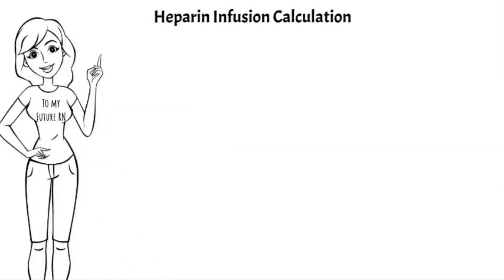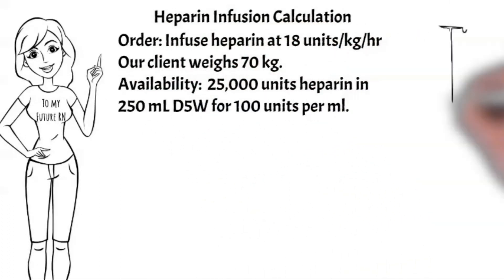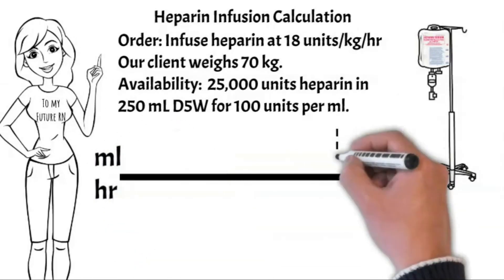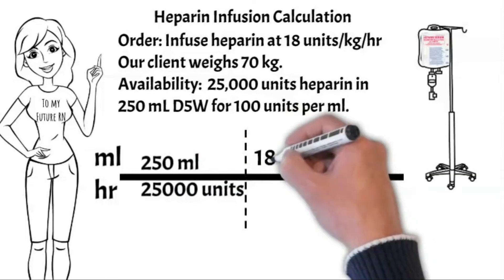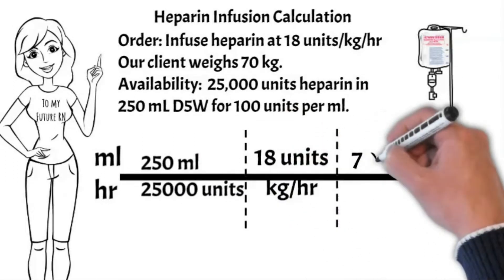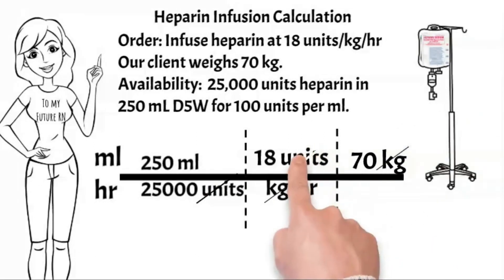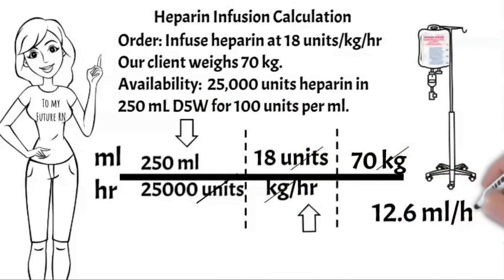The order is heparin 18 units per kilogram per hour. The patient weighs 70 kilograms. The drug is available at 25,000 units in 250 mL of D5W. We are looking for mL per hour to set up the pump. Setup: 250 mL over 25,000 units, multiplied by 18 units per kilogram per hour, multiplied by 70 kilograms. Multiply across and divide — the answer is 12.6 mL per hour.